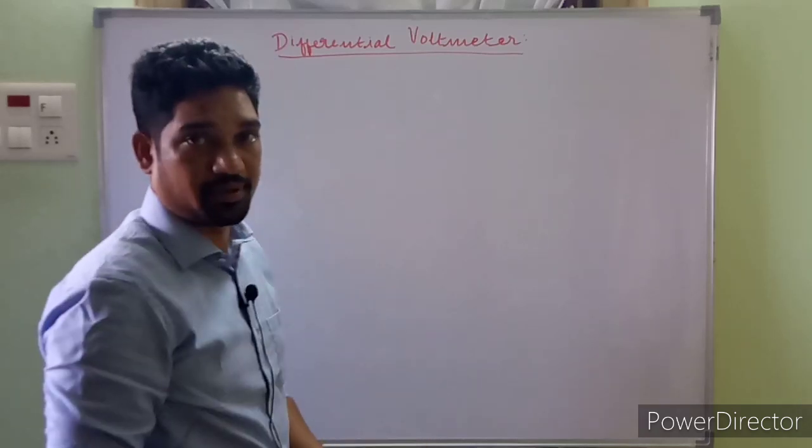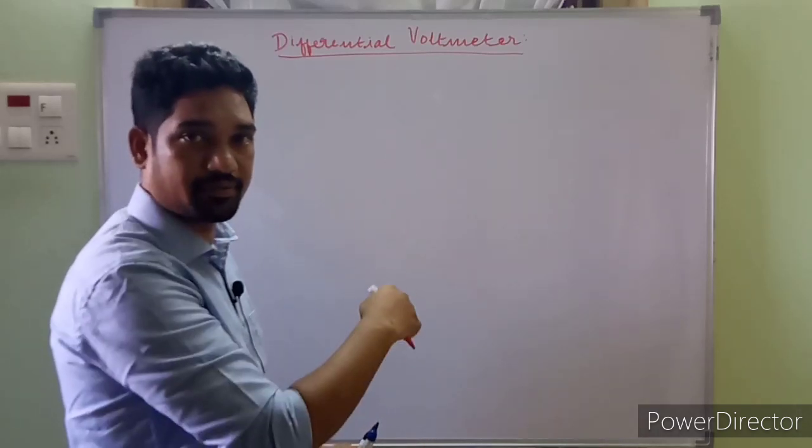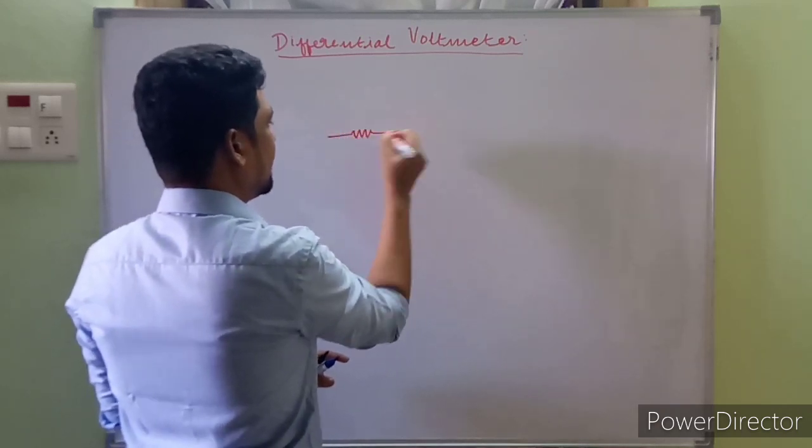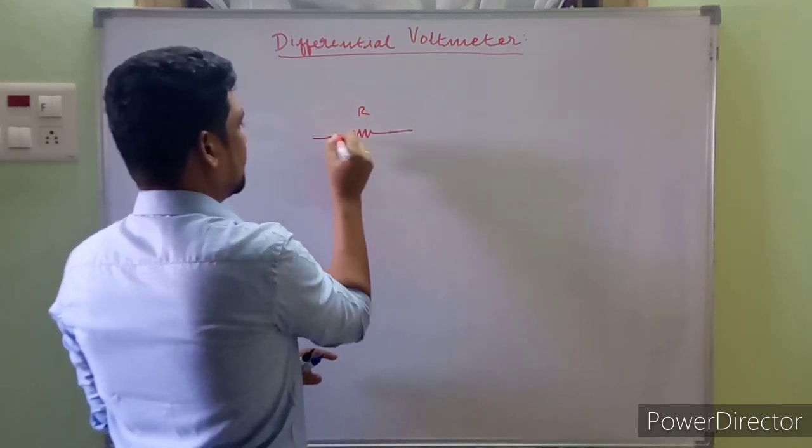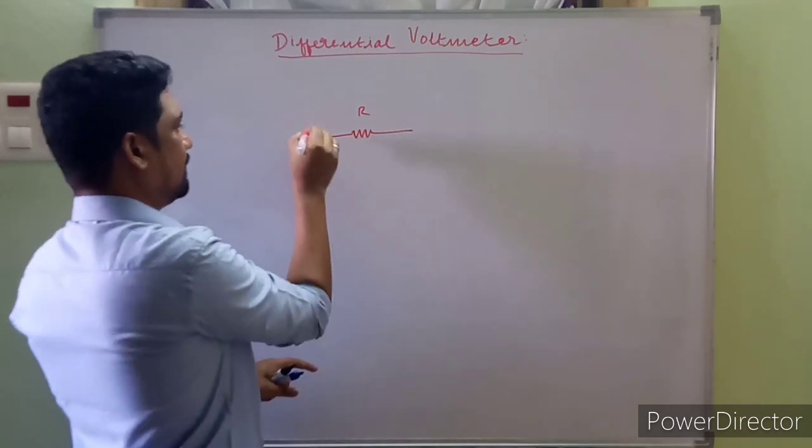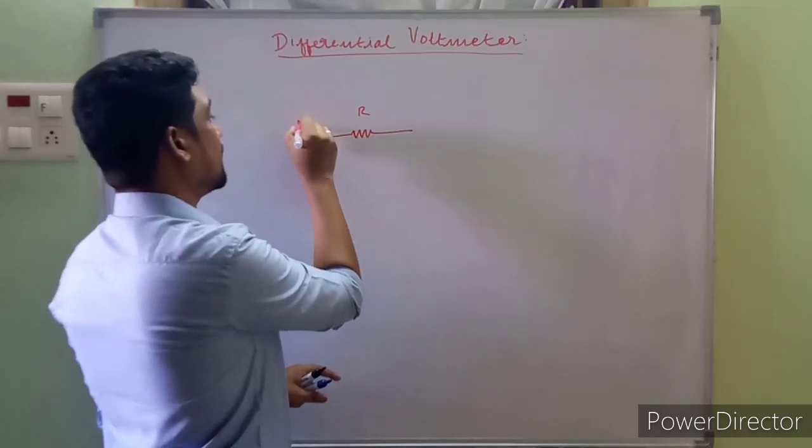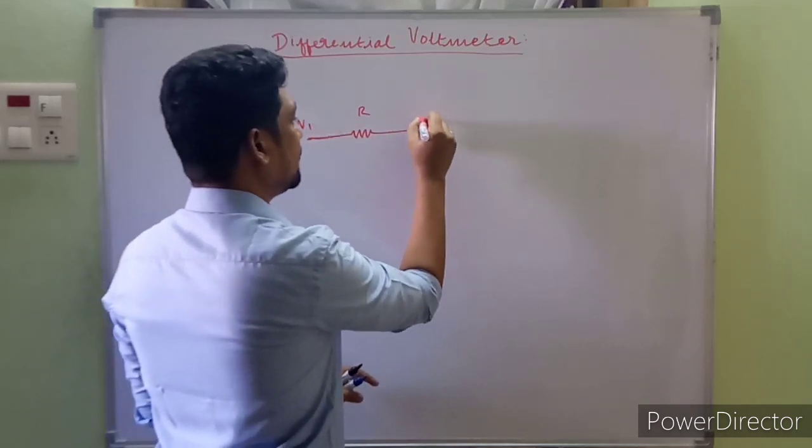So the fundamental principle - where did that come from? What if we have a resistance R, and what if we have two voltage drops on either side of the resistance, let it be V1 and let it be V2.